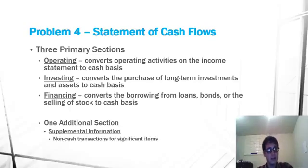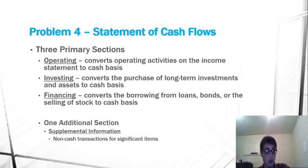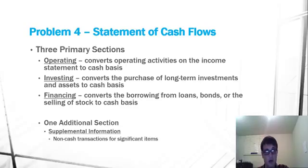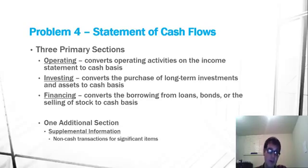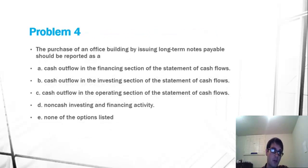Financing activities have to deal with financing investments and operating activities. So financing activities could be borrowing from loans or bonds, or even increasing equity by selling stock. We could also be issuing dividends for financing activities. These are the three primary sections, and then we also have our additional section. So let's look at the problem and figure out where it fits into the sections.